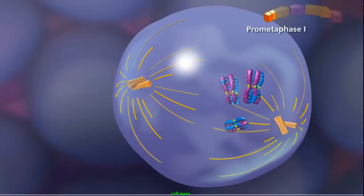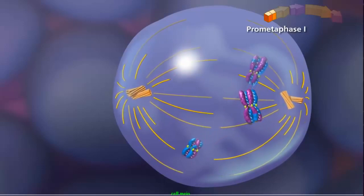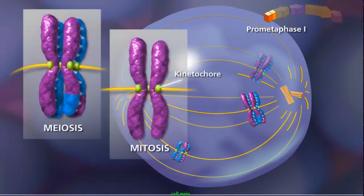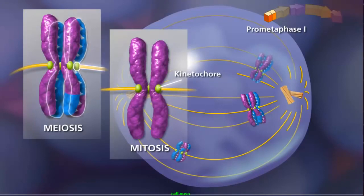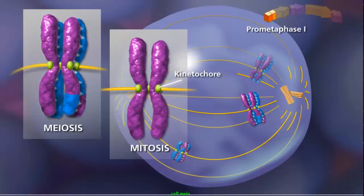In prometaphase I, with the paired centrioles in place, the meiotic spindle is fully formed. The sister chromatids attach to the spindle fibers by their kinetochores. Here, another key difference between mitosis and meiosis occurs. Because of synapsis and crossing over in meiosis, homologous chromosomes remain aligned, so that a pair of sister chromatids is attached to only one pole by the kinetochore microtubules.